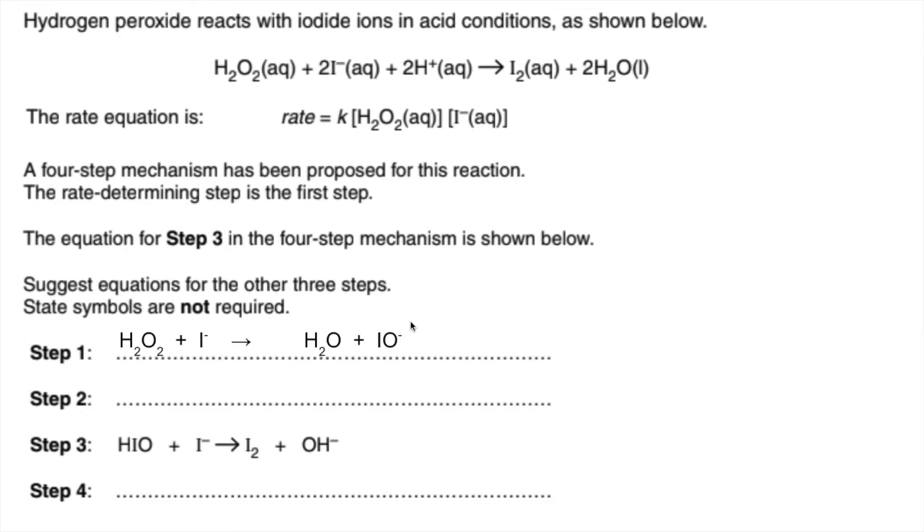Now sometimes in these you've got to make substances you've never seen before, so you're just going to have to go with that. Now does IO- feature in the overall equation? No it doesn't. So we'll get rid of that by bringing it in as a reactant in step two. I'm also going to bring in an H+ ion because we need two of those in the overall equation.